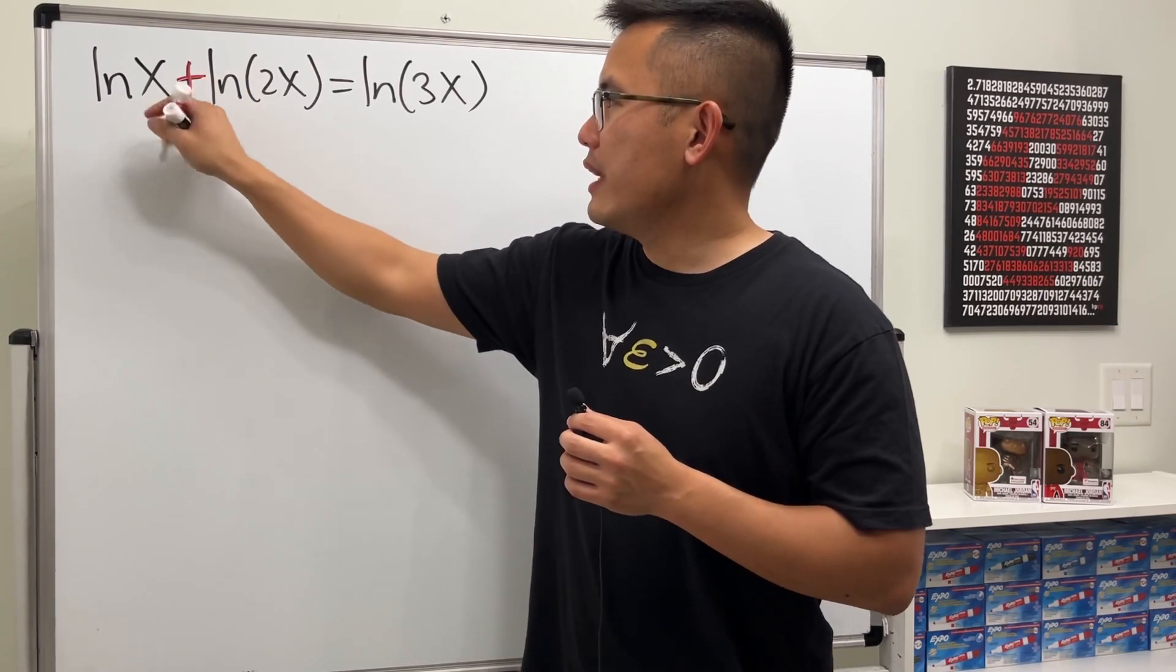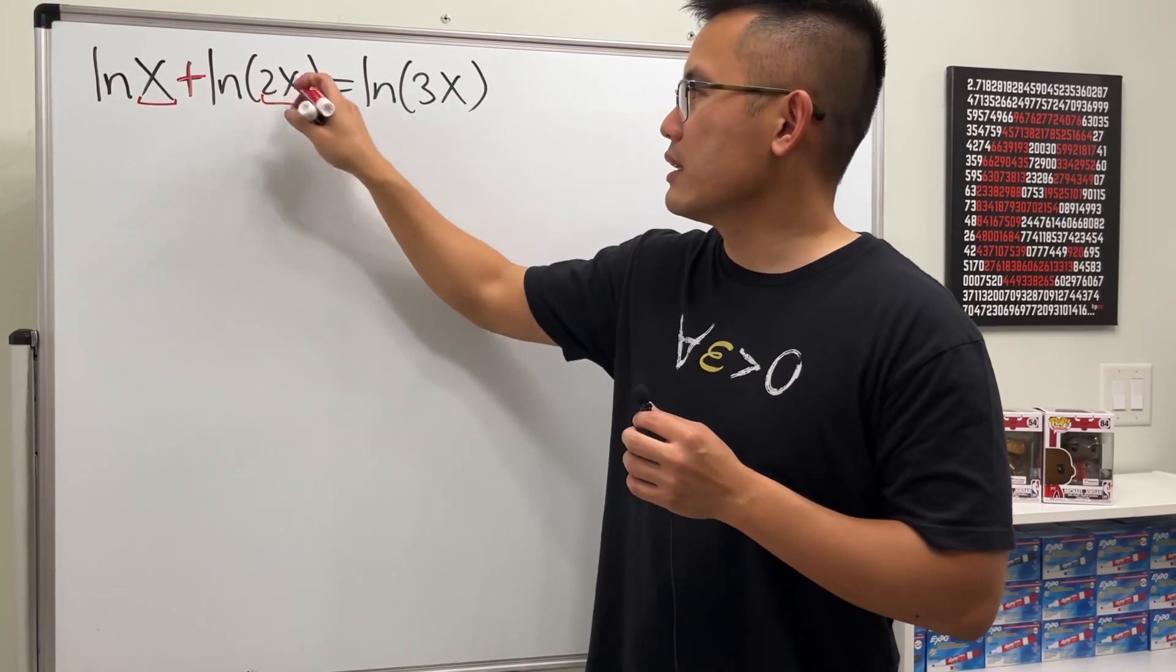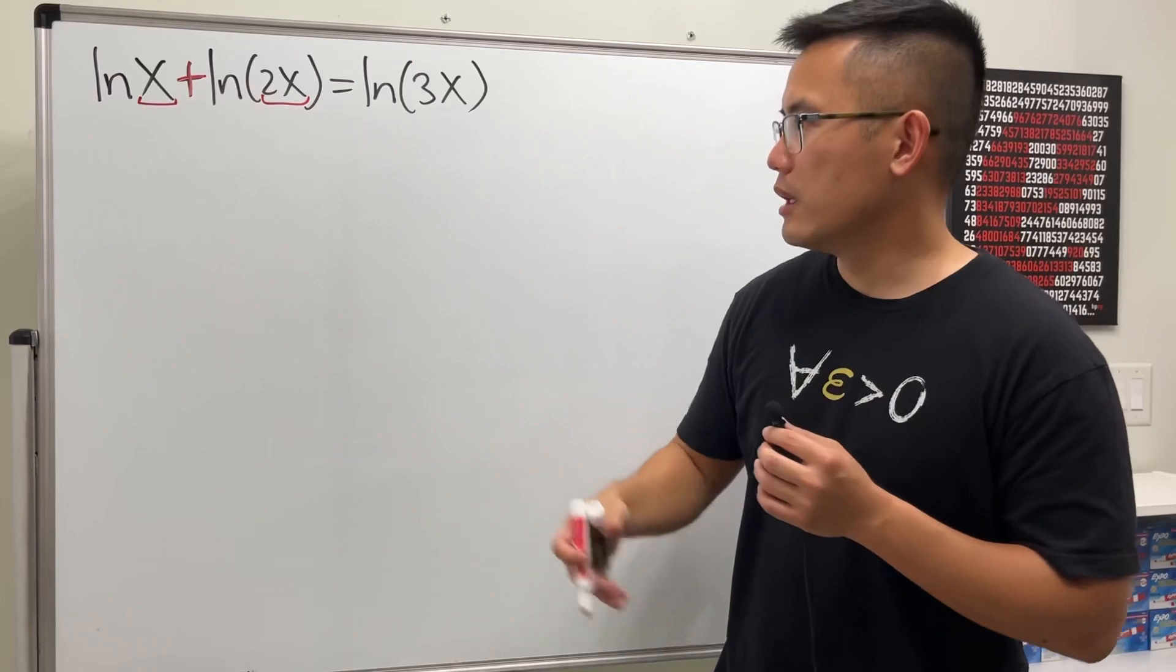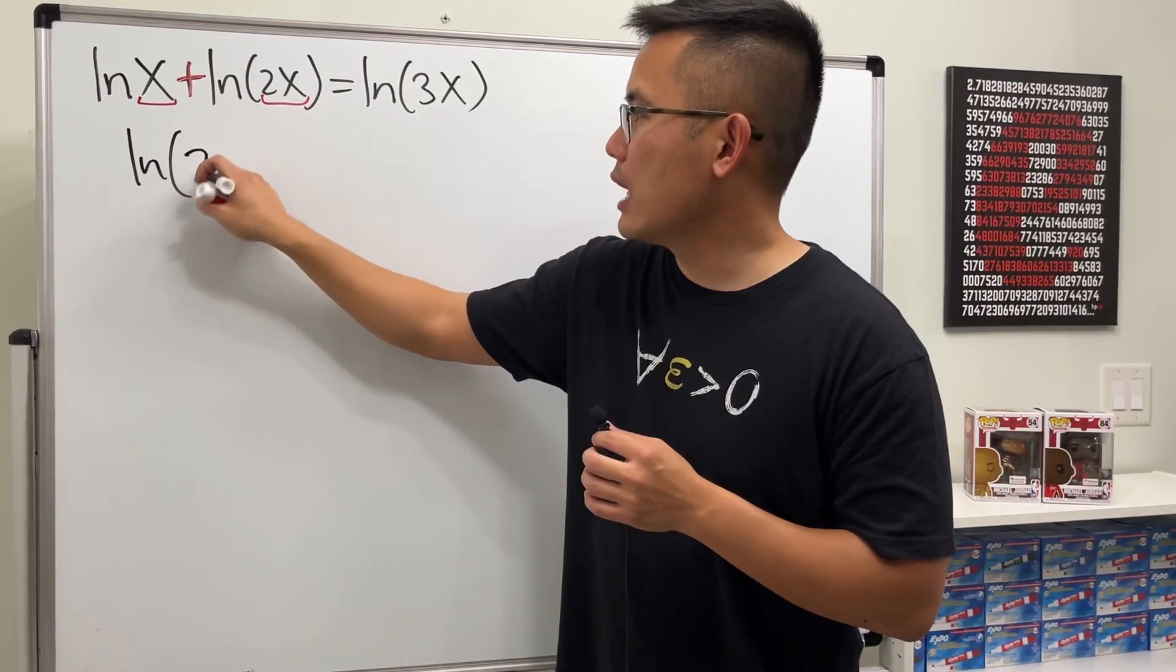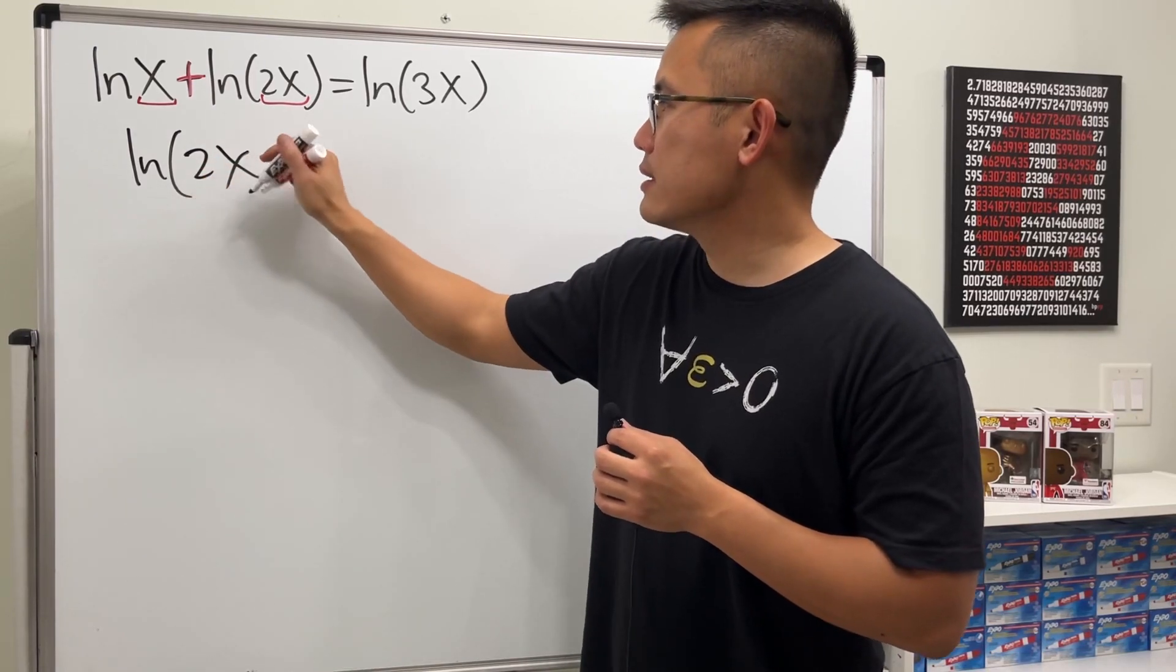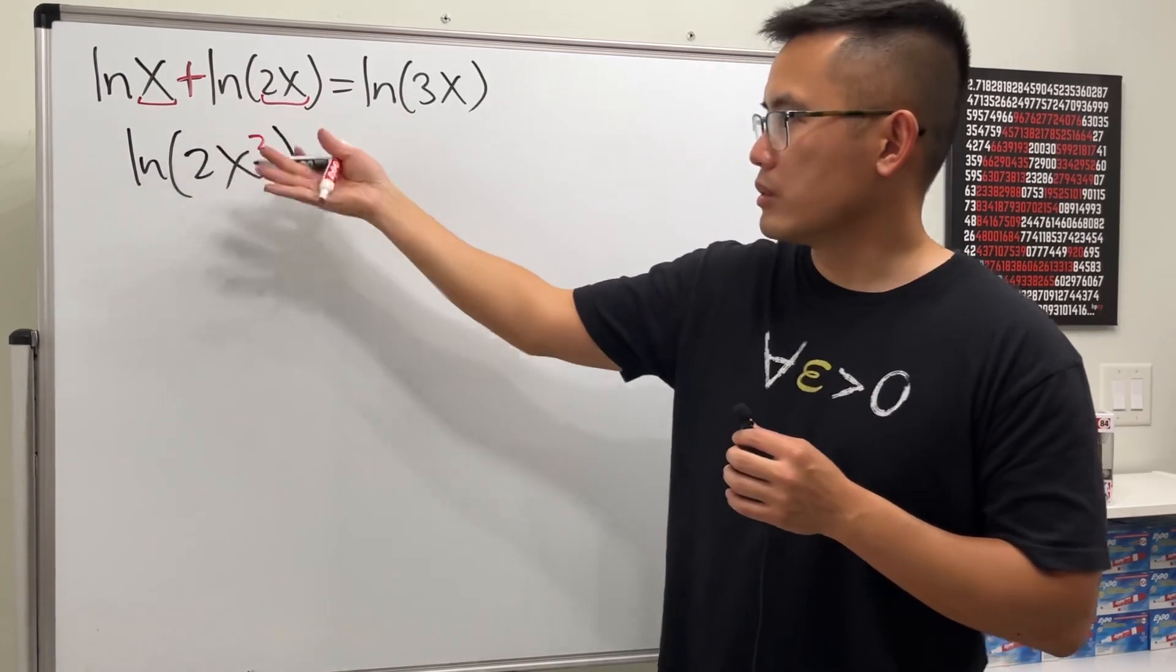Because ln(x) and then plus ln(2x), we can put the x and 2x together inside. We can say that's ln of this times that, which is ln(2x²). So they become this.